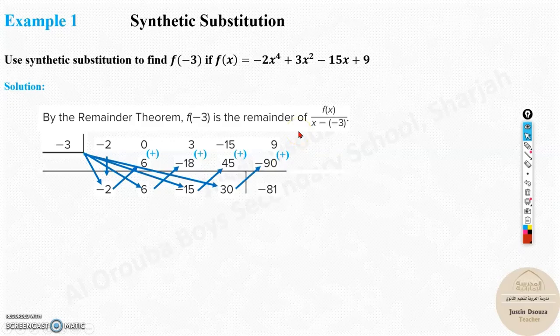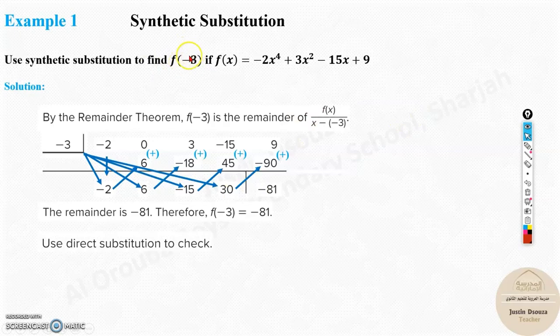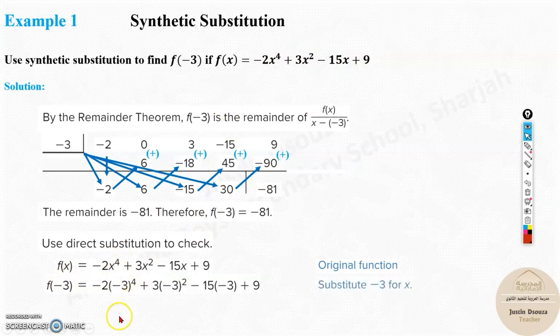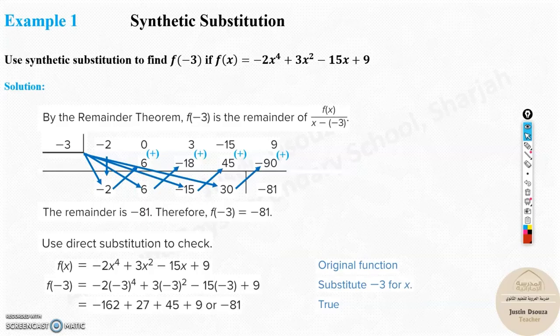Synthetic substitution gives you the same answer as substituting minus 3 directly. You can verify by substituting minus 3 and the answer will be the same. If you didn't have a calculator, synthetic substitution would be much easier. Since you have a calculator, you can use whichever method you're comfortable with — the easier method would be direct substitution.